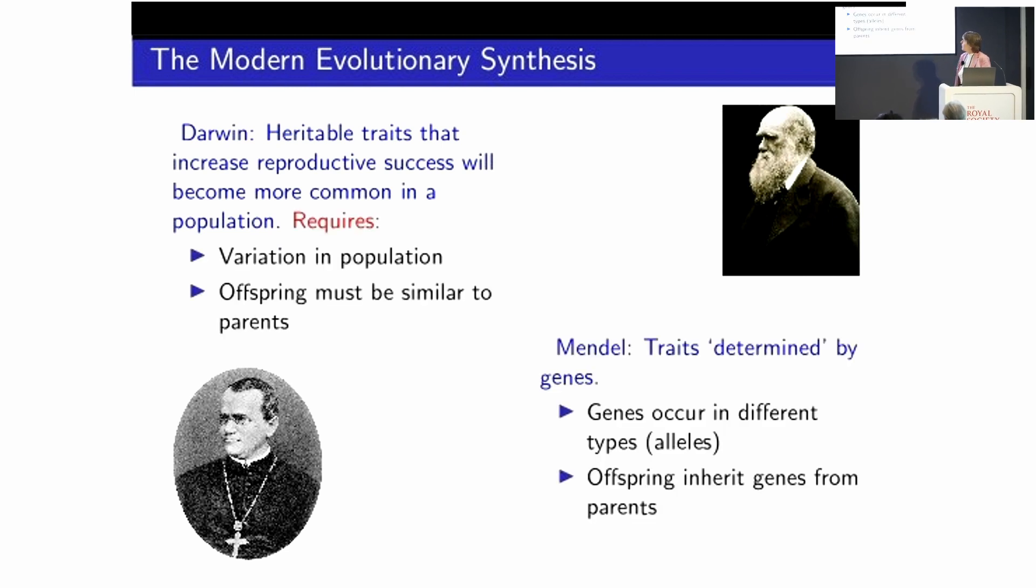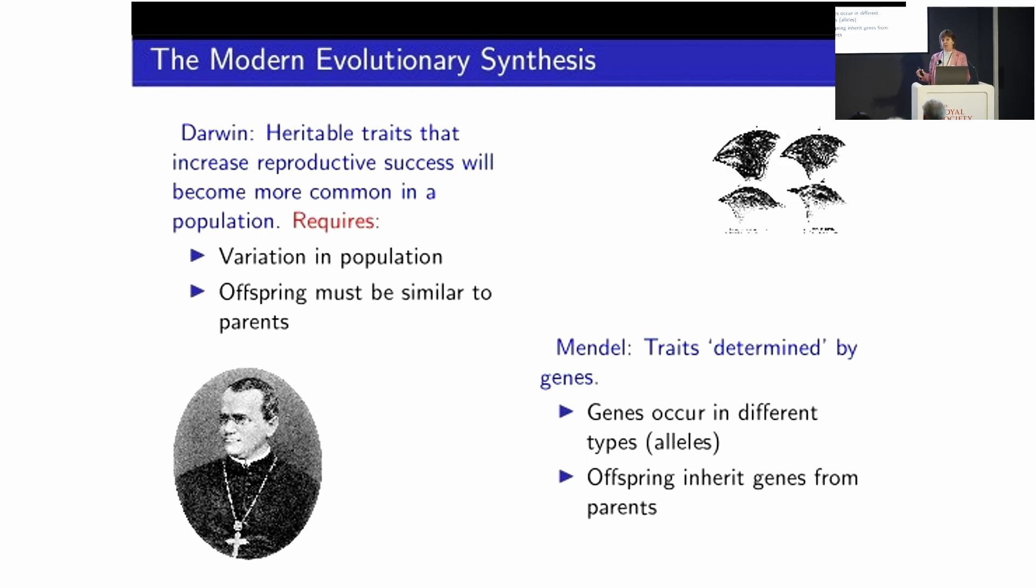So then what does Mendel tell us? Well, Mendel tells us that traits are determined by genes. But traits more generally are at least heavily influenced by the genes that we carry. And genes occur in different types, which I'm going to call alleles. And that gives us the variability that Darwin needs. And offspring inherit genes from their parents. So that gives us the heritability that Darwin needs.